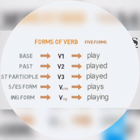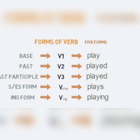Let's look at examples of different verb forms. We are taking the verb 'play'. The base form is play, past form is played, past participle form is also played, s or es form is plays, and the ing form is playing.